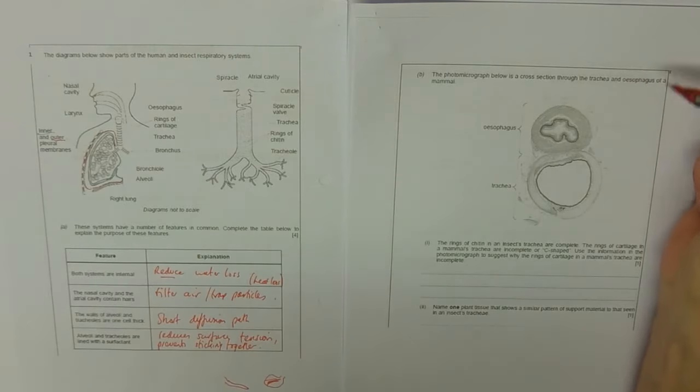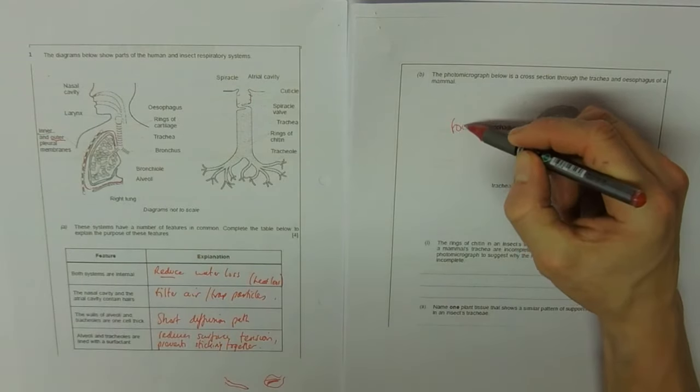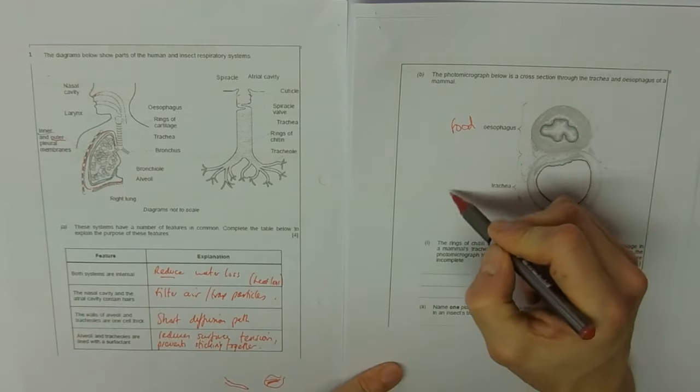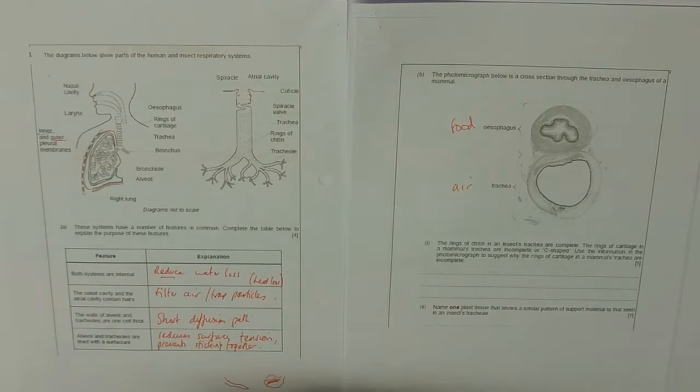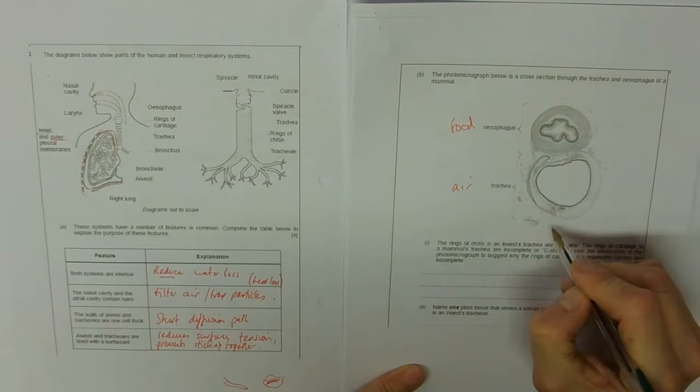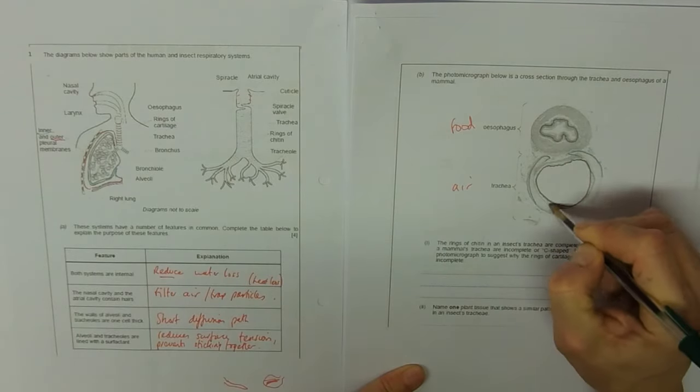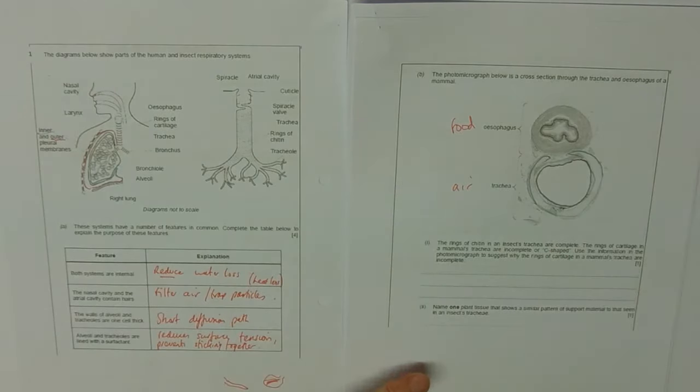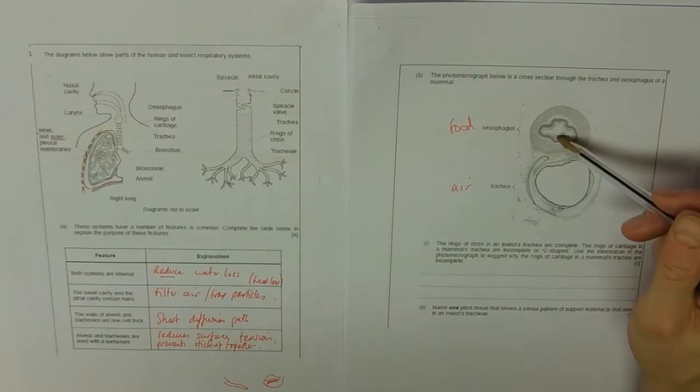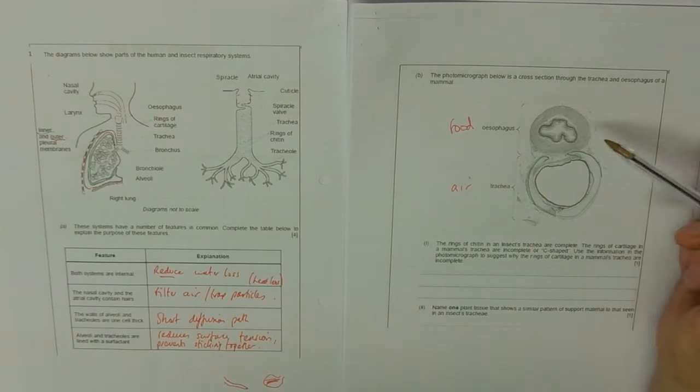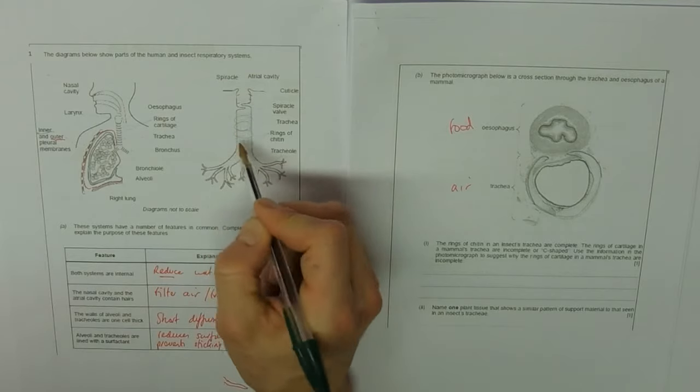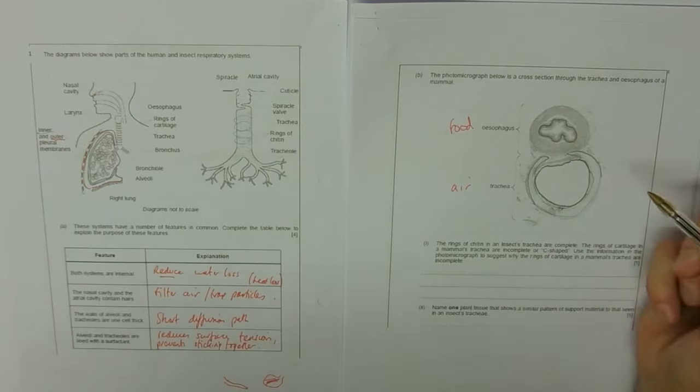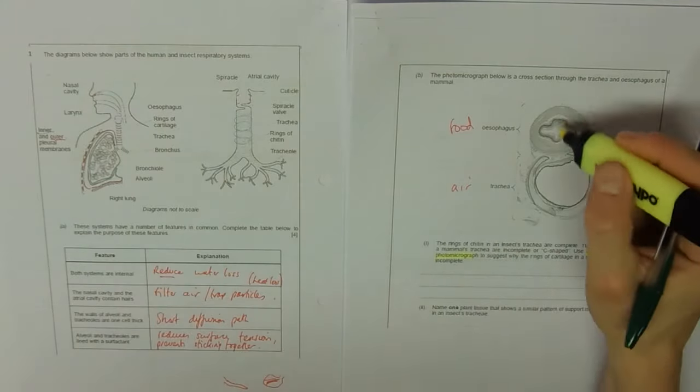Then we've got a cross section through the trachea and esophagus. The esophagus, you might not have done nutrition yet, that's for food. Trachea is for air. You can see the cartilage on this diagram doesn't extend all the way around—there's a gap there. That looks like quite a small lumen, small hole for the food to go through. The rings of chitin on the insect's trachea are complete circles, whereas this has a gap. Use the information in the photomicrograph, which means you've got to talk about the esophagus.